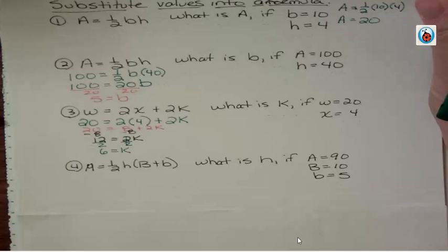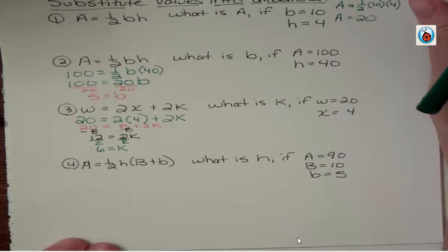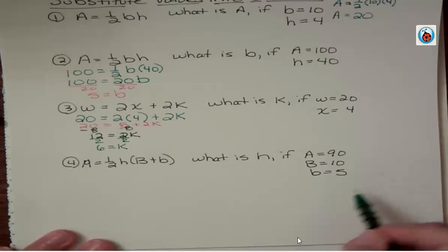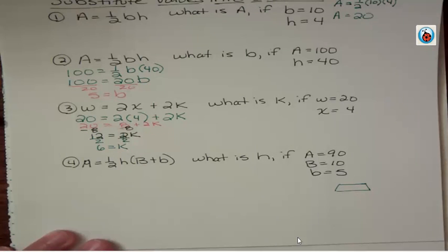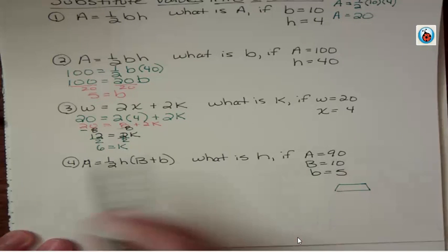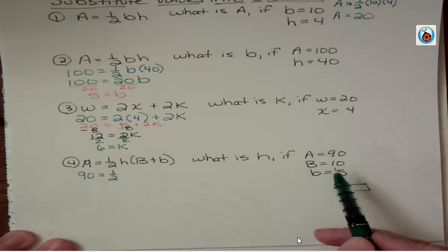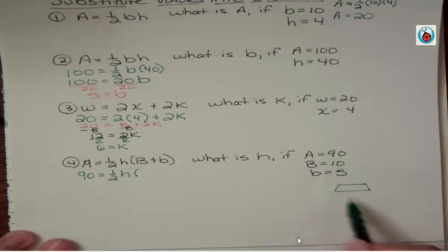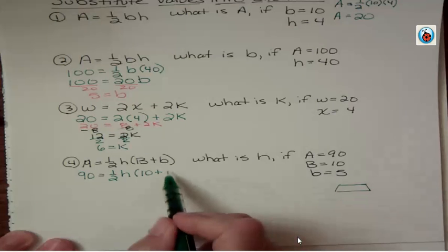One last example, a bit more complicated. This is the formula for the area of a... I just lost the word, but here's the symbol. If A = 90, and I have 1/2, and I don't know h, but I know the large base is 10 and the small base is 5.